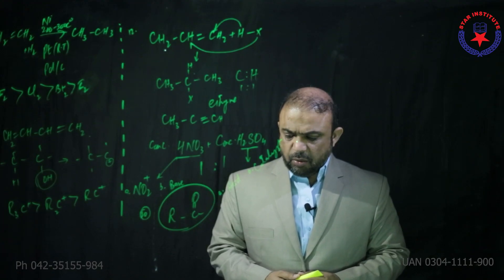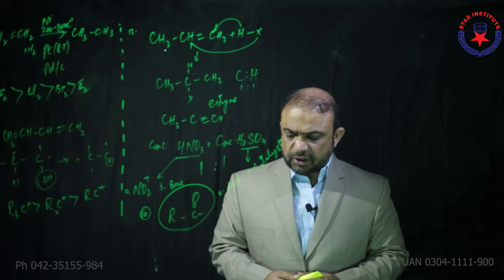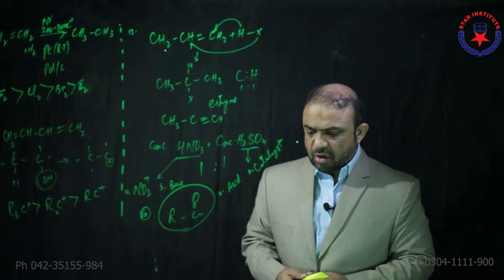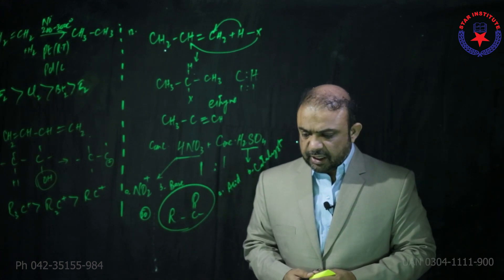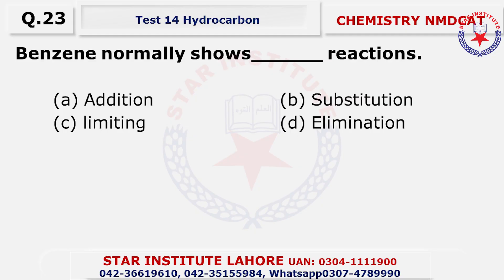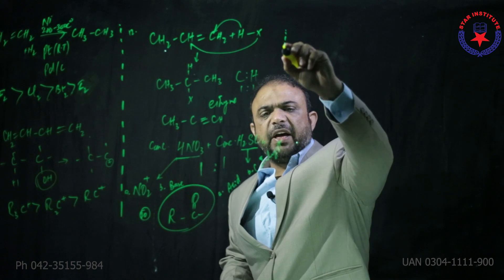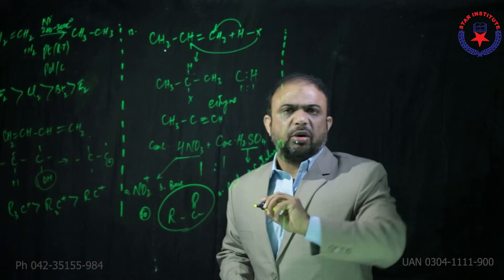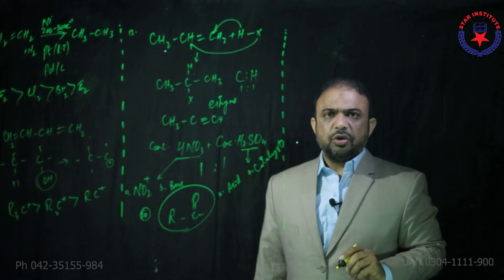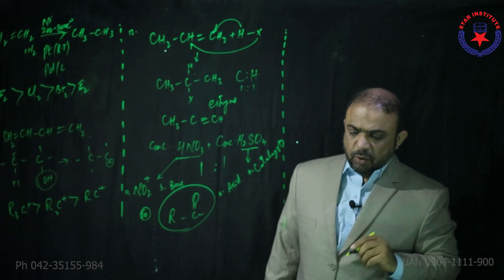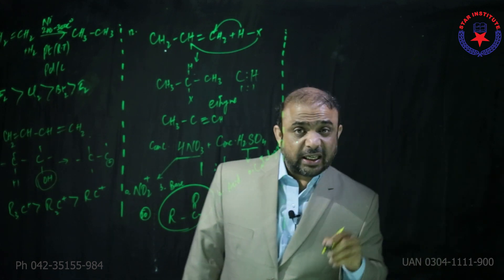Question 22: some meta-directing substituents in aromatic substitution are given; which one is the strongest? Among these, NO2 is the strongest meta-directing group. Question 23: benzene is normally very, very stable — due to the delocalized pi electron charge.